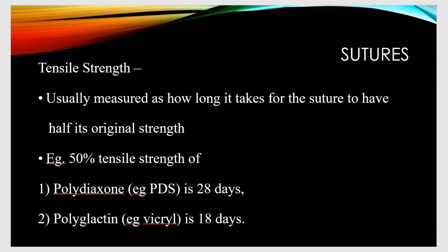Tensile strength is usually measured as how long it takes for the suture material to lose half its original strength. For example, the 50% tensile strength of polydioxone, commonly known as PDS, is 28 days. Polygalactin, commonly known as Vicryl, is 18 days.